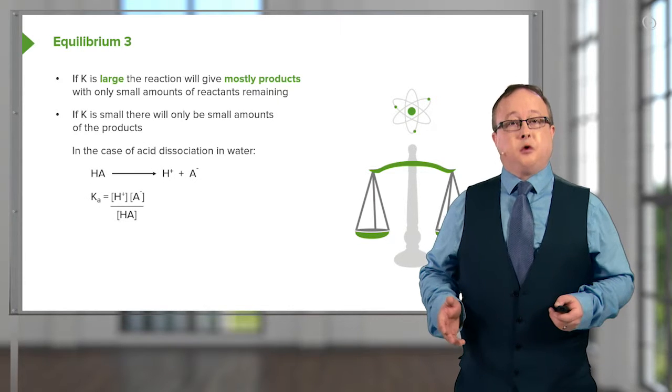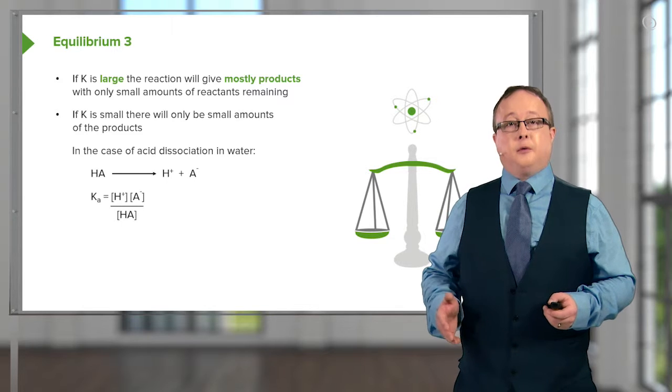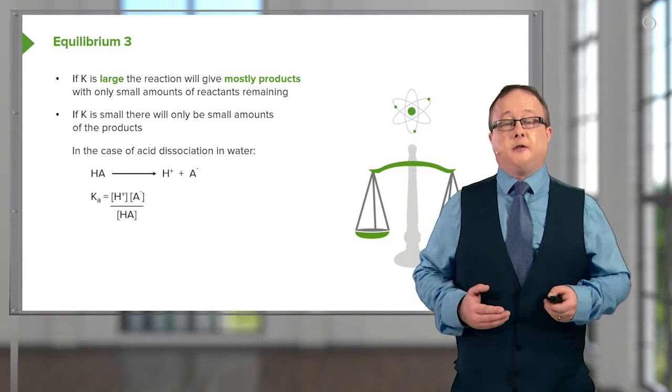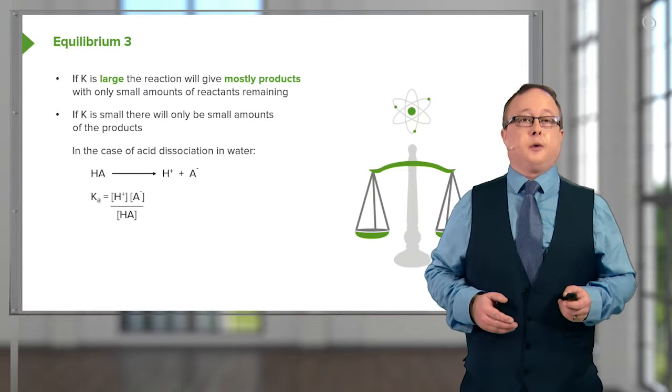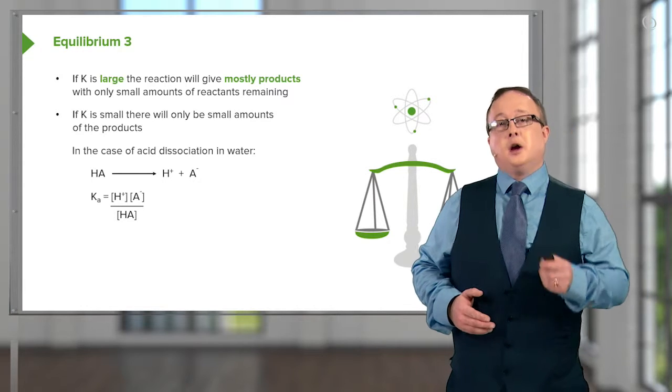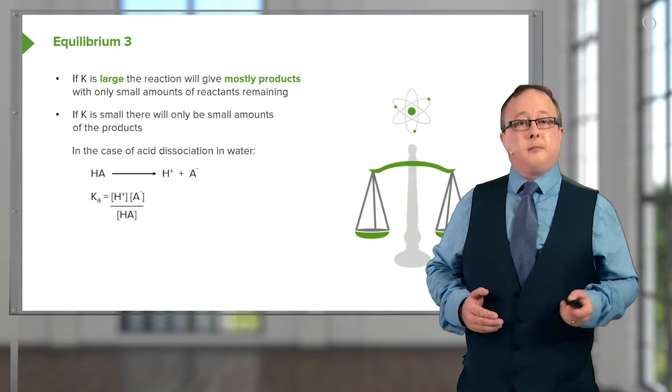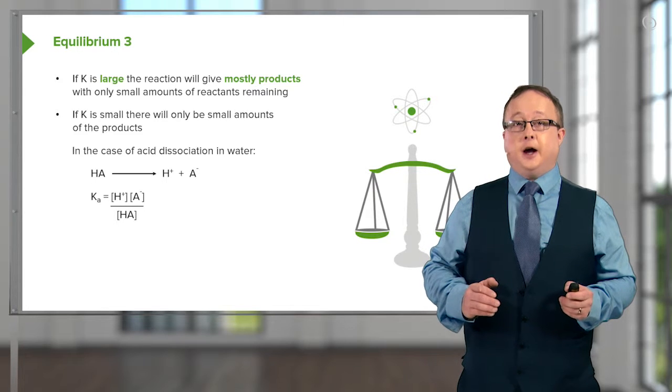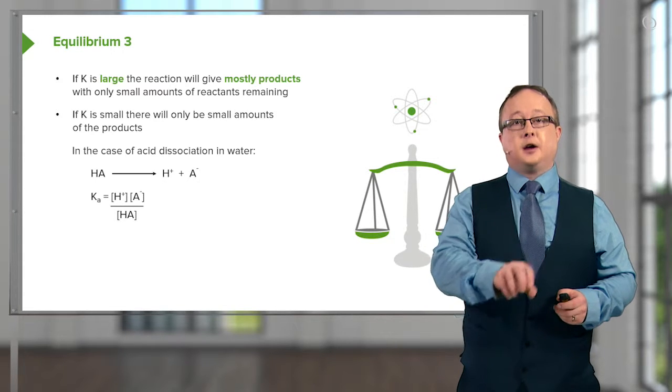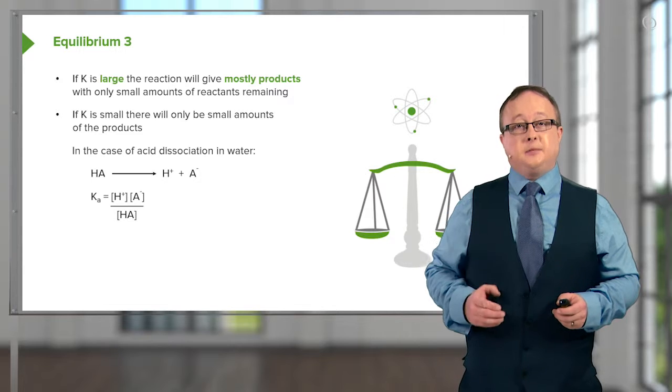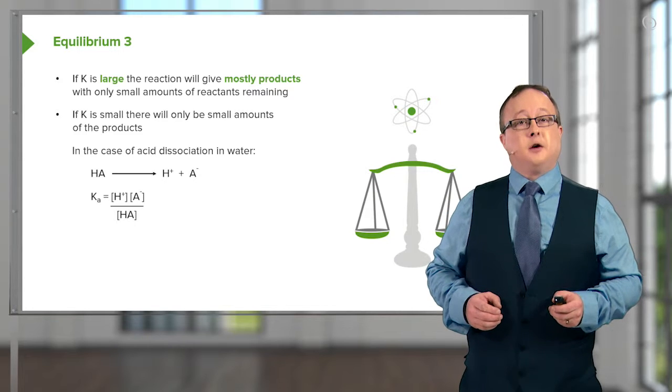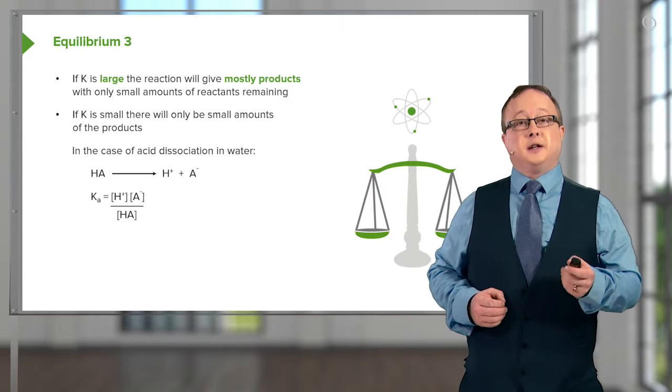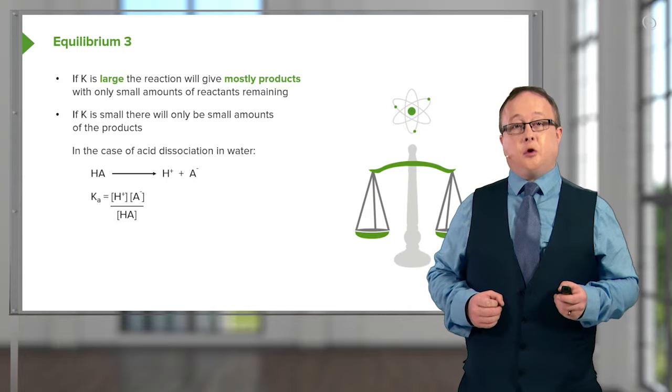In the case of the dissociation of water, which I've shown you before, where you can get H plus and OH minus, which, for the sake of argument, is represented as A minus in this particular equation shown on the board, you can see that the equilibrium constant for this is the lysis of one concentration of acid, HA, into H plus and A minus. And so, in this particular case, we can denote the equilibrium constant for this dissociation as the acidity constant, or KA.